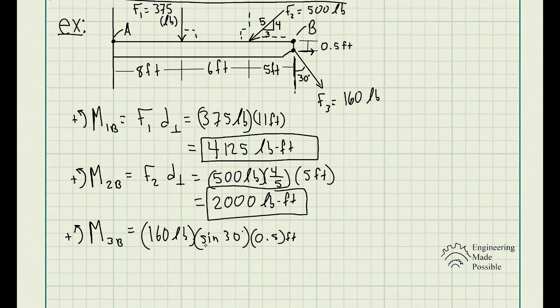This will cause rotation which will be counterclockwise with respect to B. So it's 160 pounds times sine 30 degrees. In this case, we do have the angle and we just get the X component sine 30 times the perpendicular distance from that X component of the force, which is 0.5 feet. So the moment that the force F3 causes along point B is 40 pound feet.